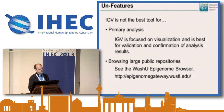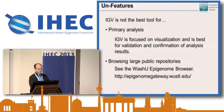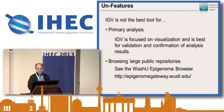So what's IGV not good for? It's really not a tool for primary data analysis — you should do that elsewhere. It takes a very long time to pan across the genome looking for things. The primary use I see is visualizing results that you've computed elsewhere, for confirmation and validation. It's also not the best tool for browsing large repositories such as UCSC or Epigenome Roadmap — for that I'll direct you to the epigenome browser.